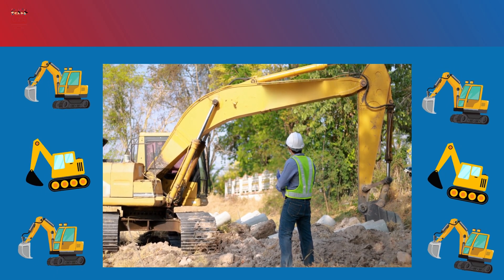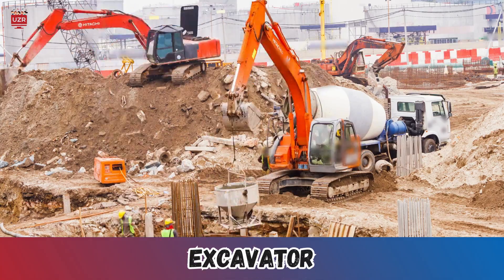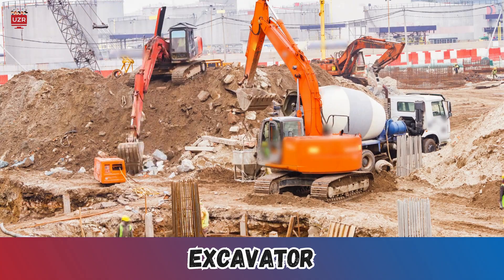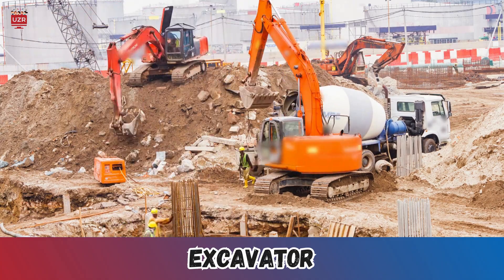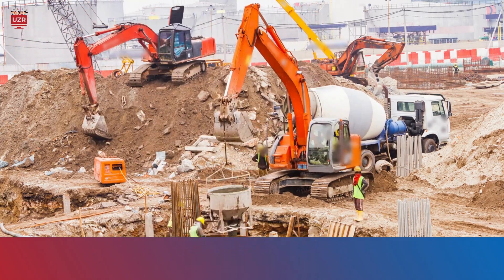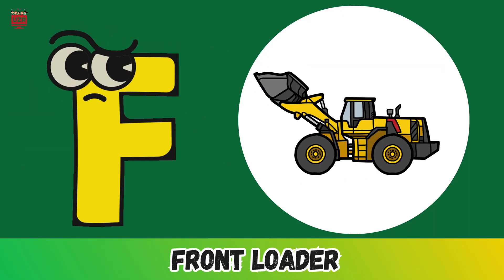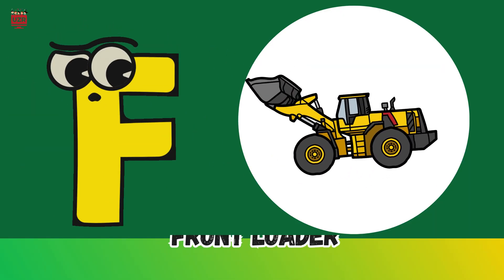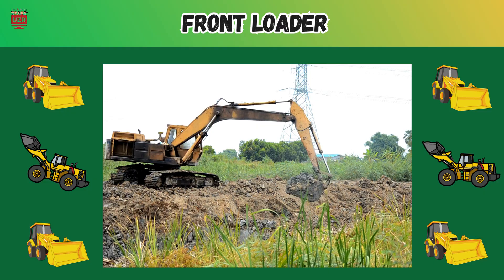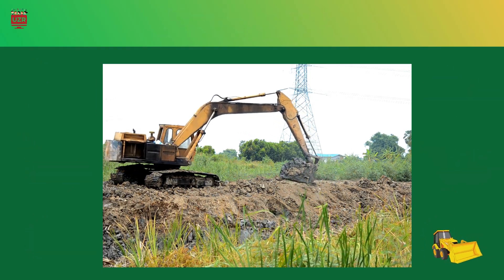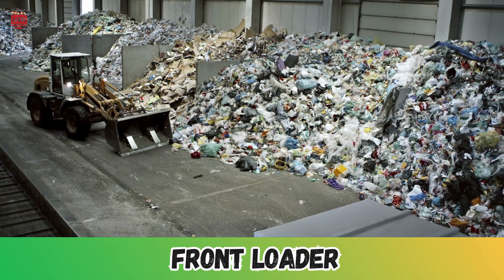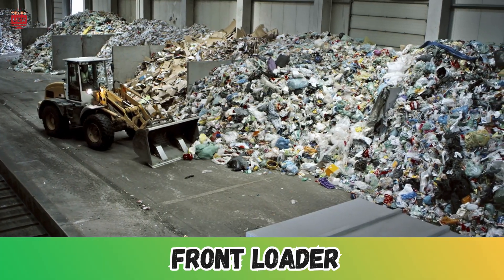E is for excavator. Excavator — it digs deep holes with its big bucket arm. F is for front loader. Front loader — it scoops up soil to clear the way.